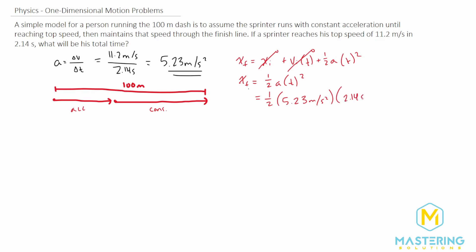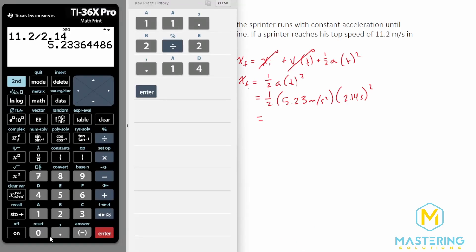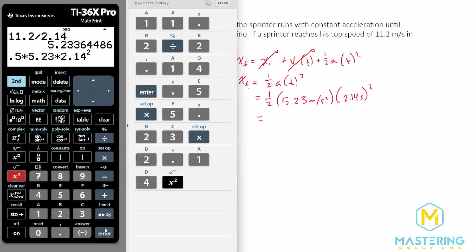2.14 seconds squared. So we have 0.5 times 5.23 times 2.14, and we'll square the time.